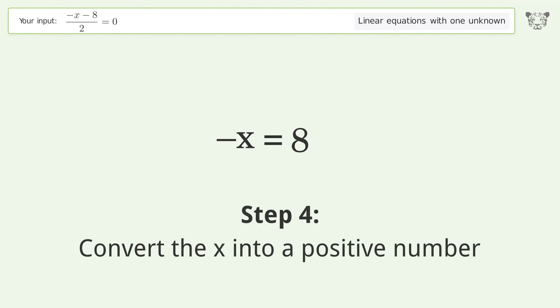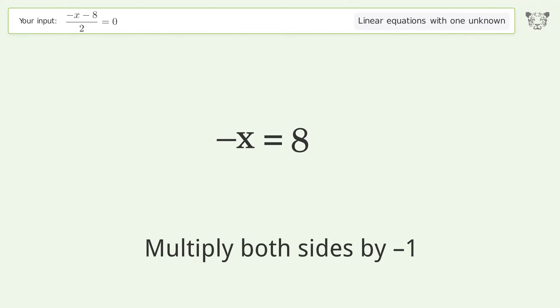Convert the x into a positive number by multiplying both sides by negative 1. Remove the ones. Simplify the arithmetic. And so the final result is x equals negative 8.